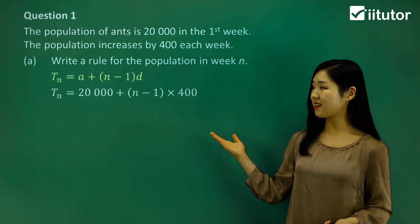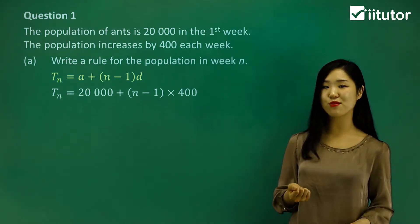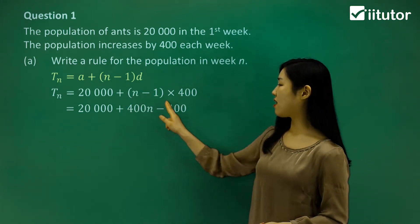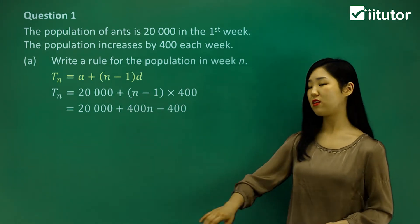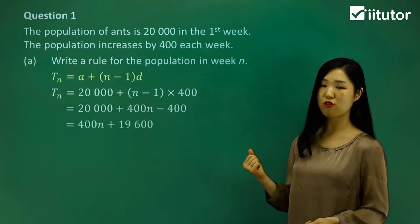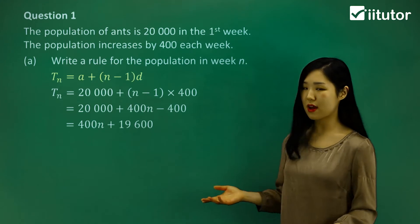Now let's expand and simplify to find the final rule. I've expanded the brackets. 400 times n is 400n, and 400 times negative 1 is minus 400. Then 20,000 minus 400 gives us 19,600.